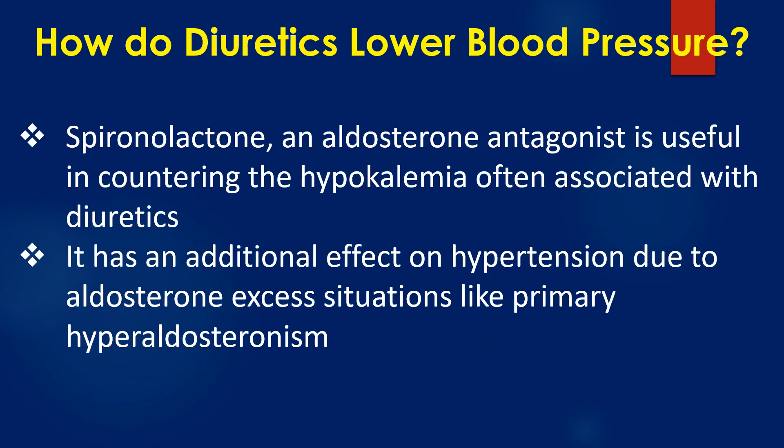Spironolactone, an aldosterone antagonist, is useful in countering the hypokalemia often associated with diuretics. It has an additional effect on hypertension due to aldosterone excess situations, like primary hyperaldosteronism.